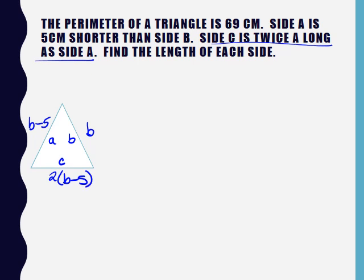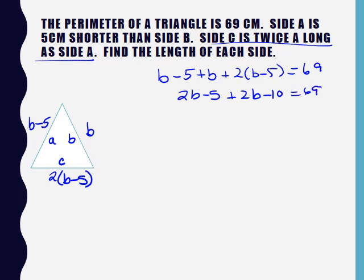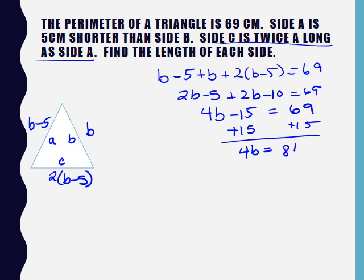It's the perimeter, so I'm going to add everything up. B minus 5 plus B plus 2 times (B minus 5) equals 69. If I combine my like terms, I get 4B minus 15 equals 69. I'm going to add 15 to both sides and I get 4B equals 84.